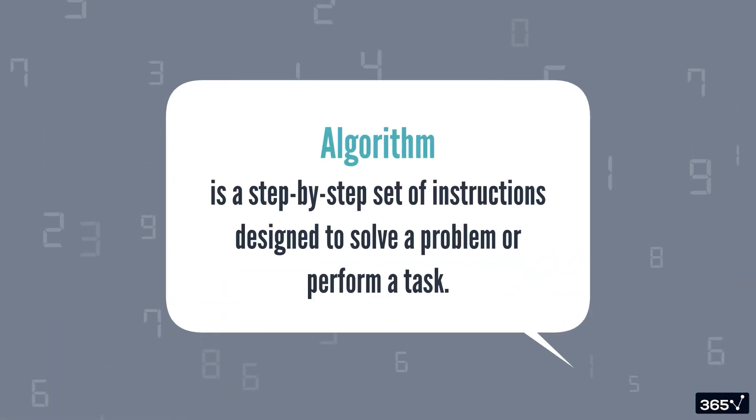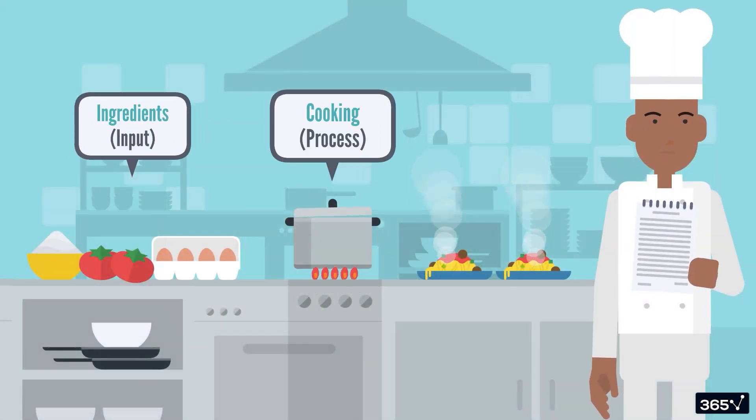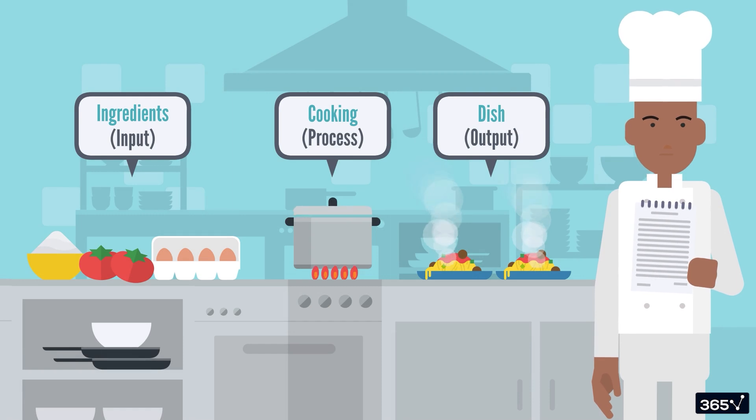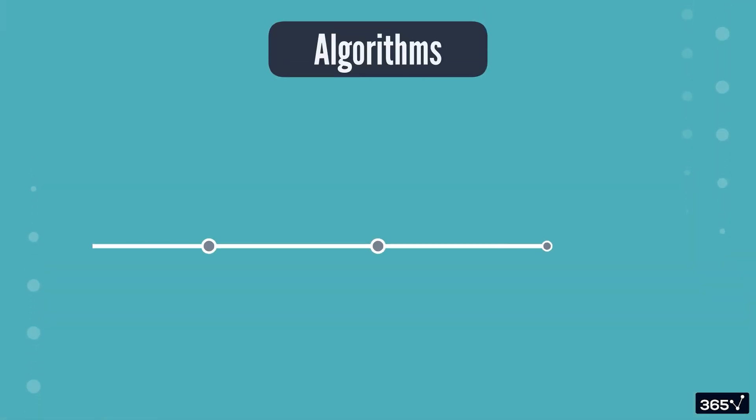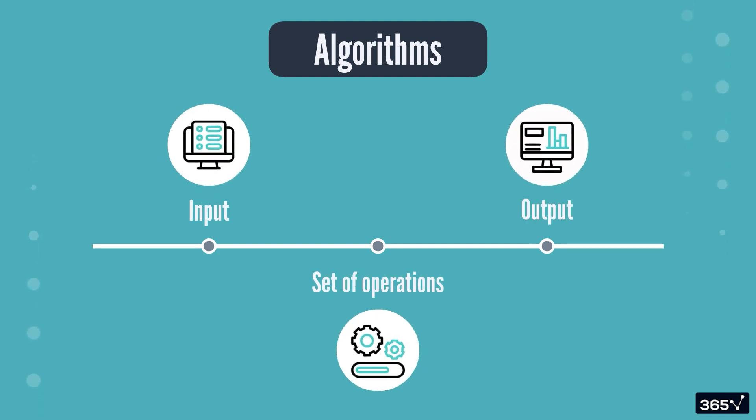At its core, an algorithm is simply a step-by-step set of instructions designed to solve a problem or perform a task. Think of it as a recipe that tells you exactly how to achieve a desired outcome. In more technical terms, an algorithm is a finite sequence of well-defined steps that take specific inputs, perform a set of operations, and produce a desired output.